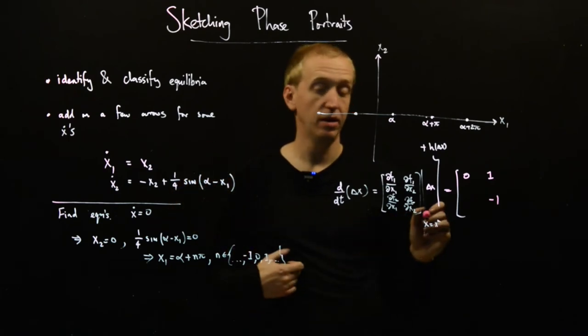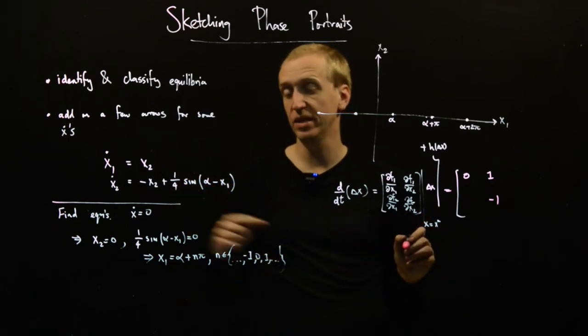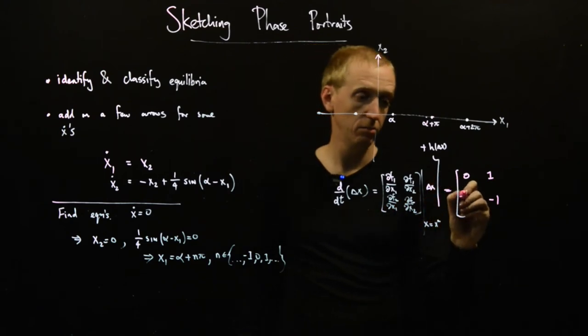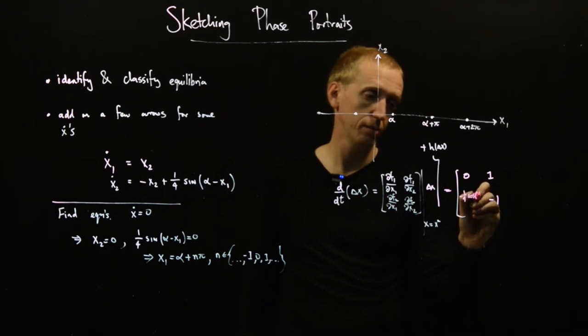And then finally, what do we get here? Well, if we differentiate this thing with respect to x1, we get minus a quarter cos alpha minus x1.